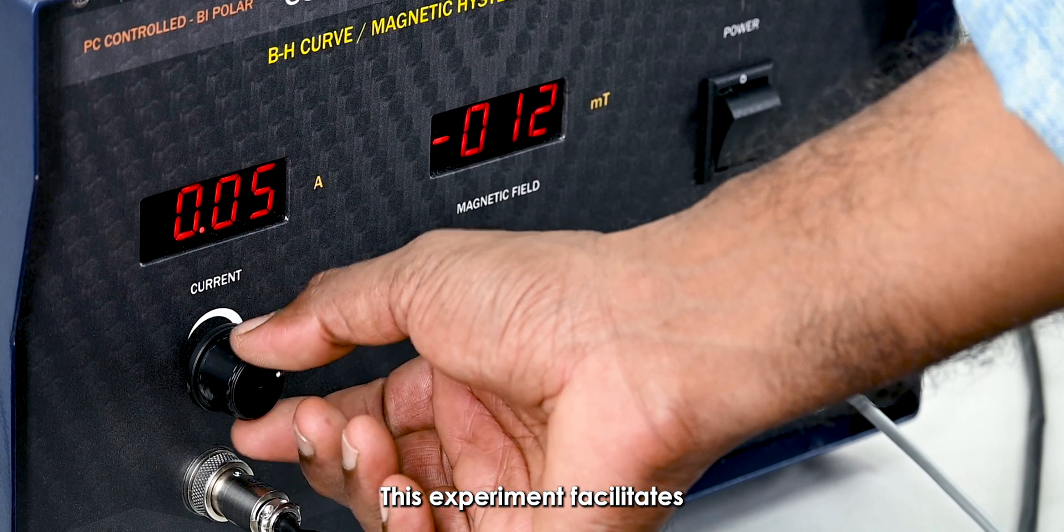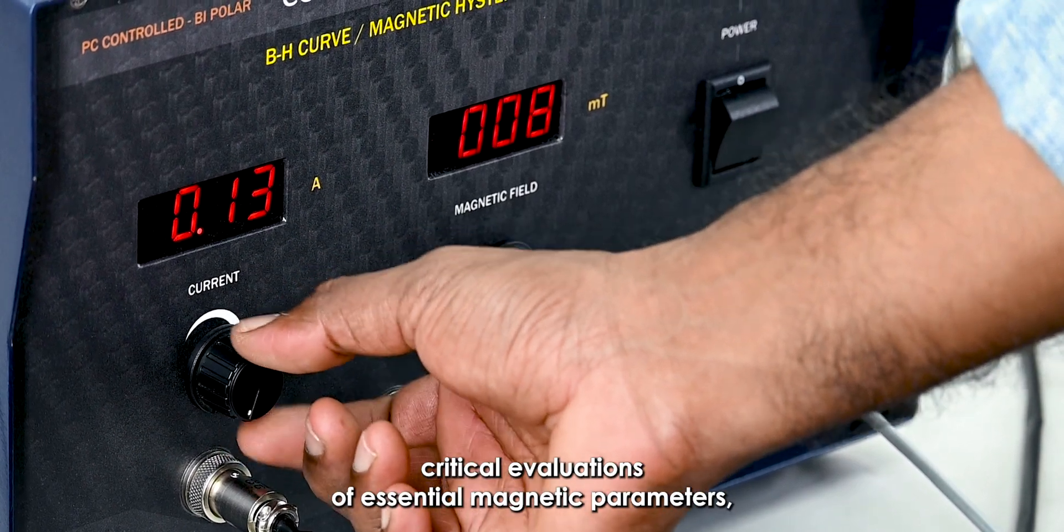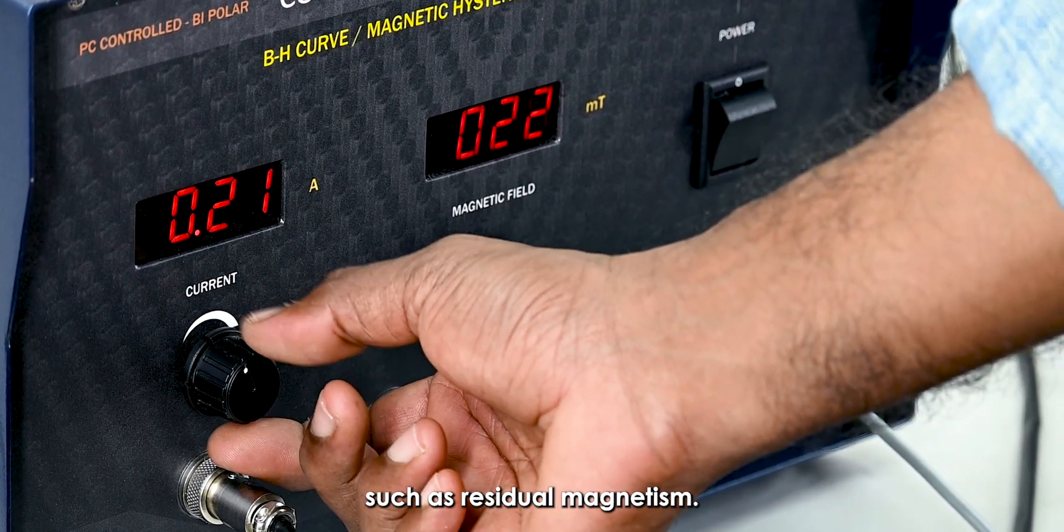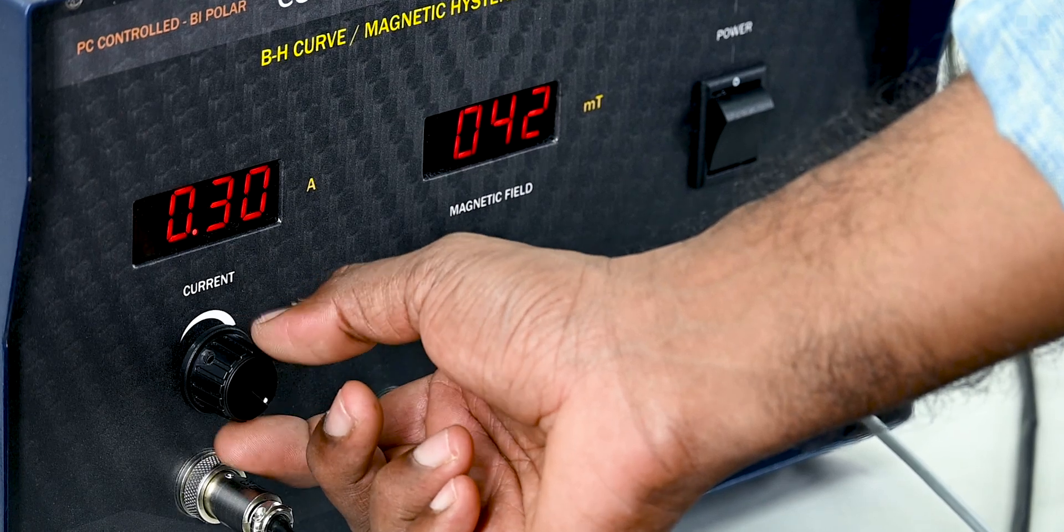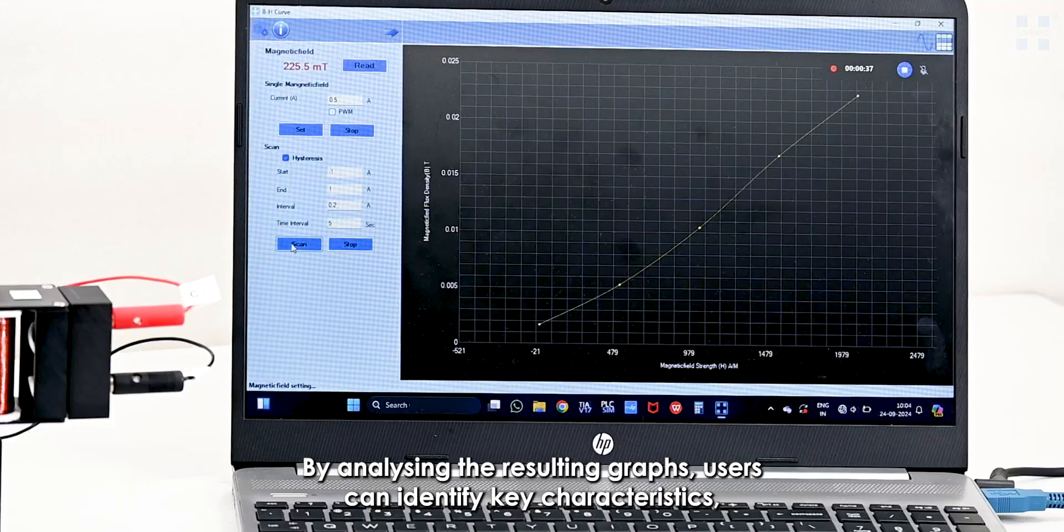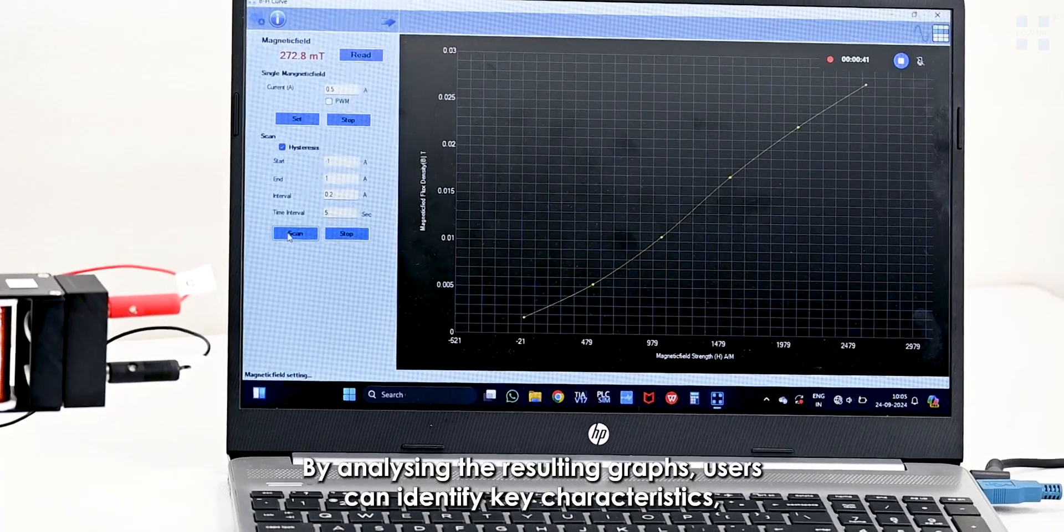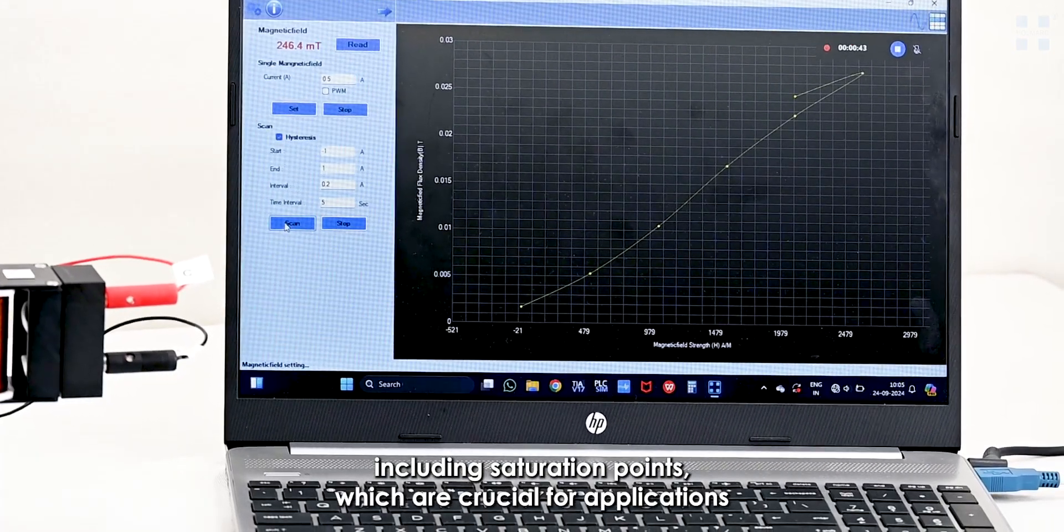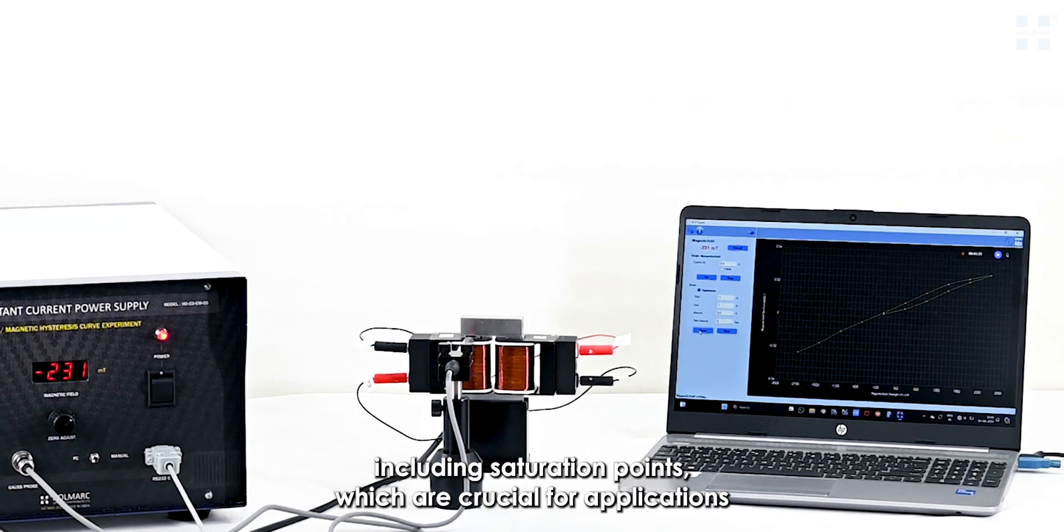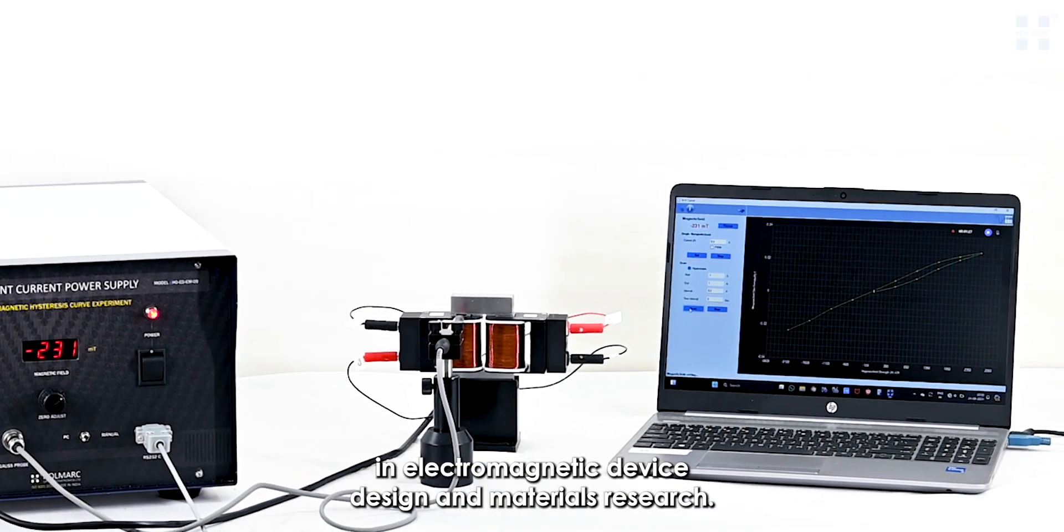This experiment facilitates critical evaluations of essential magnetic parameters, such as residual magnetism. By analyzing the resulting graphs, users can identify key characteristics, including saturation points, which are crucial for applications in electromagnetic device design and materials research.